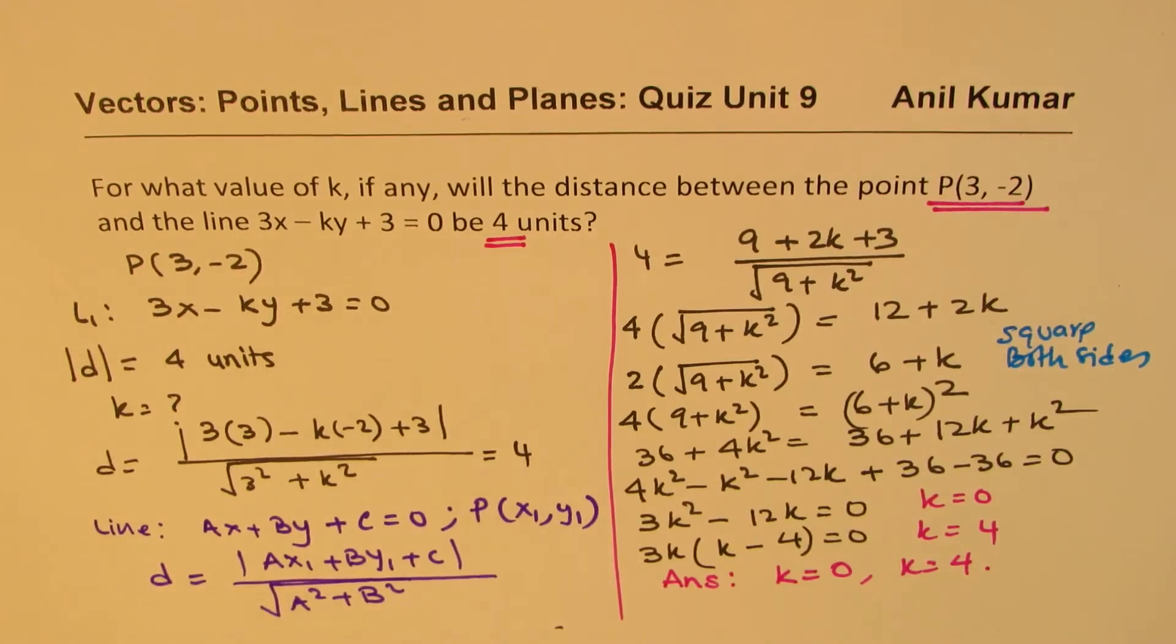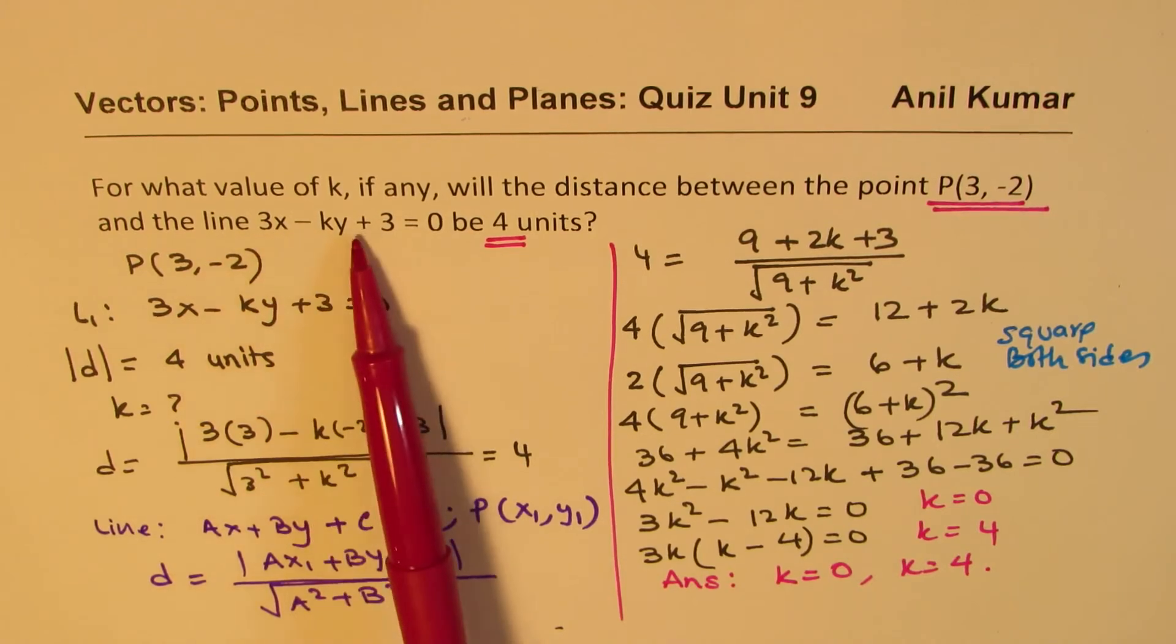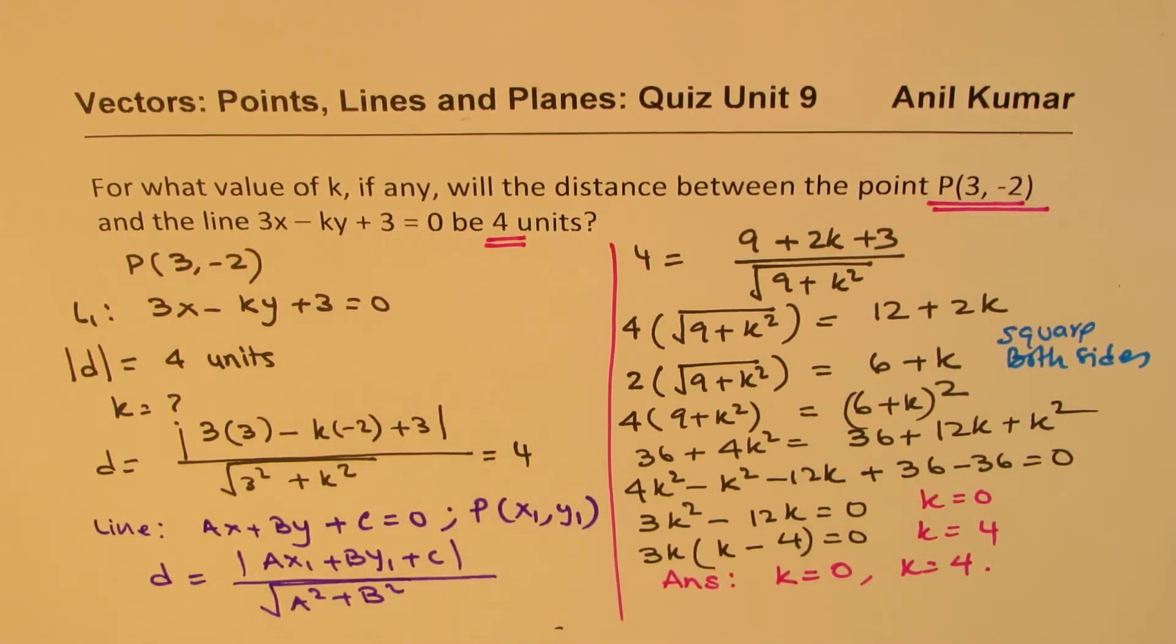And it makes sense, because if you have a line here, x = -1, then also you get a distance of 4 units. So I think that is interesting. So that is how you can find the value of k in the given situation.